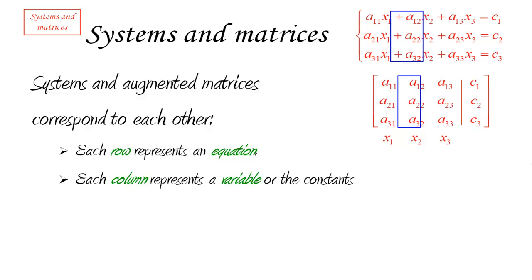For instance, the first column there in the system, the column containing all the x1 terms, corresponds to the first column in the matrix. If I move down to the second column in the system, namely the one that consists of all the terms involving x2, that corresponds to the second column of the matrix, and so on.